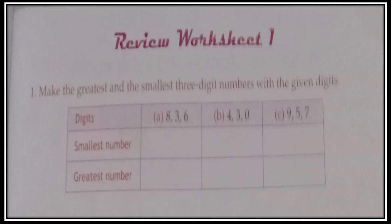Children, see the first question: make the greatest and the smallest 3-digit numbers with the given digits. You have to make the smallest and greatest 3-digit numbers from the digits written at the top. Now see Part A — digits 3, 6, 8. As I told you, whenever you are making the smallest number, follow ascending order; for the greatest number, follow descending order. So the smallest number is 368 and the greatest is 863.